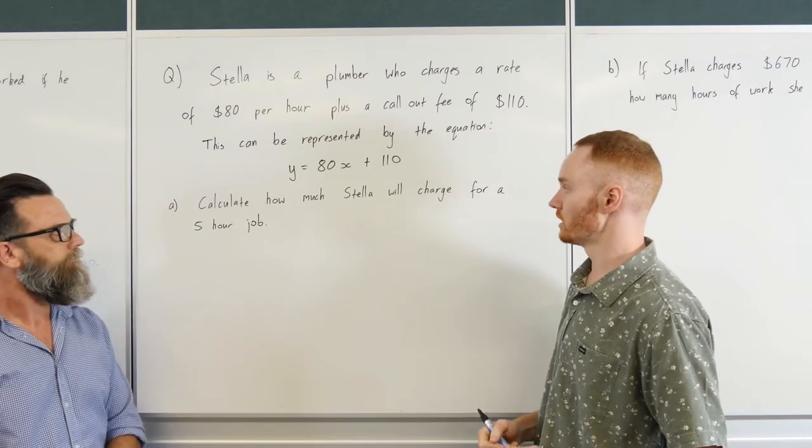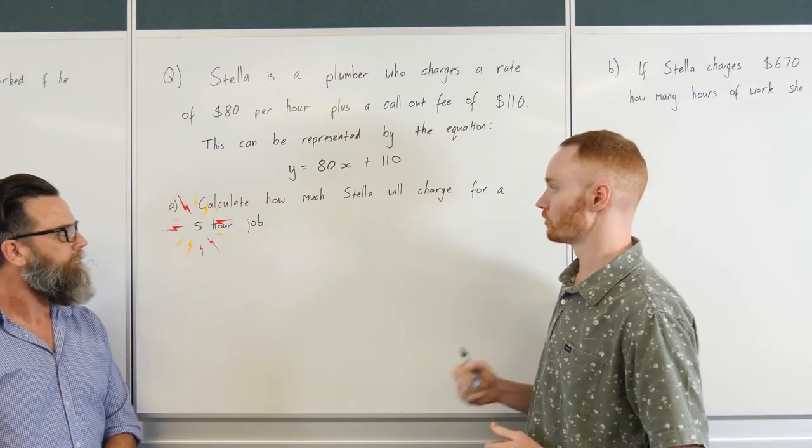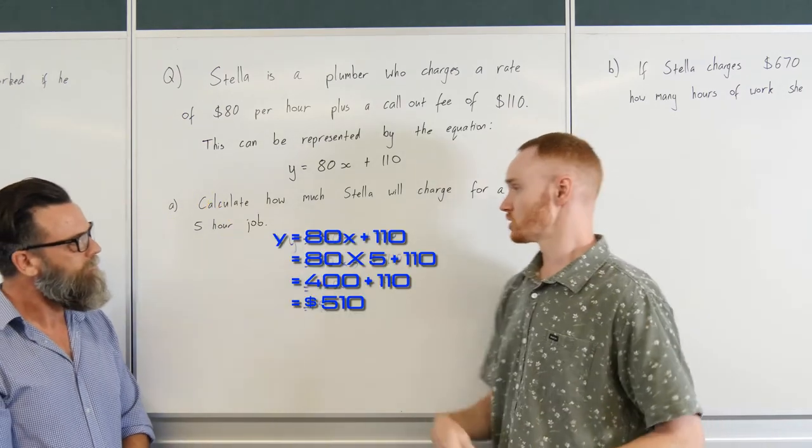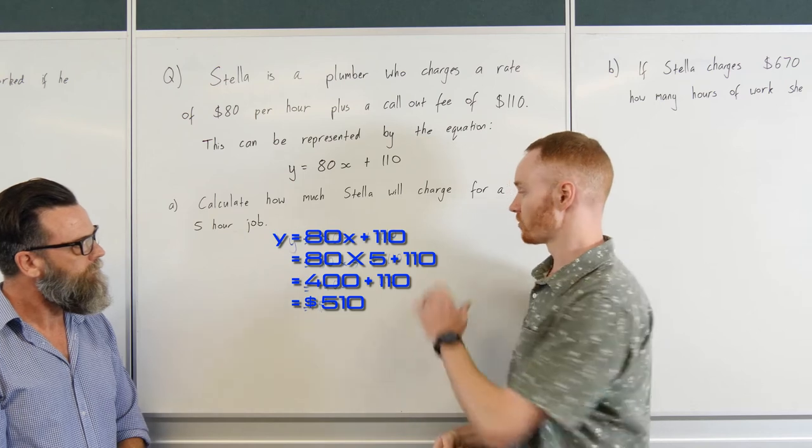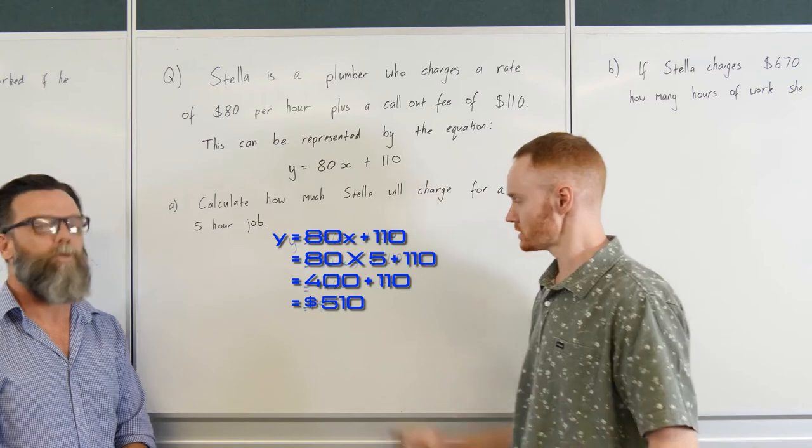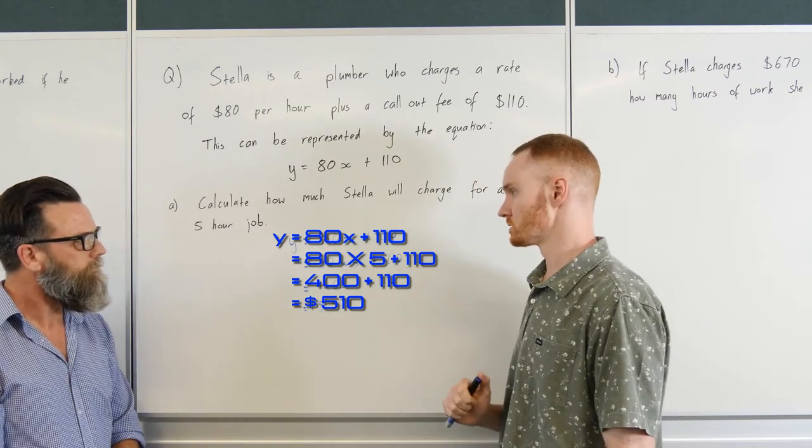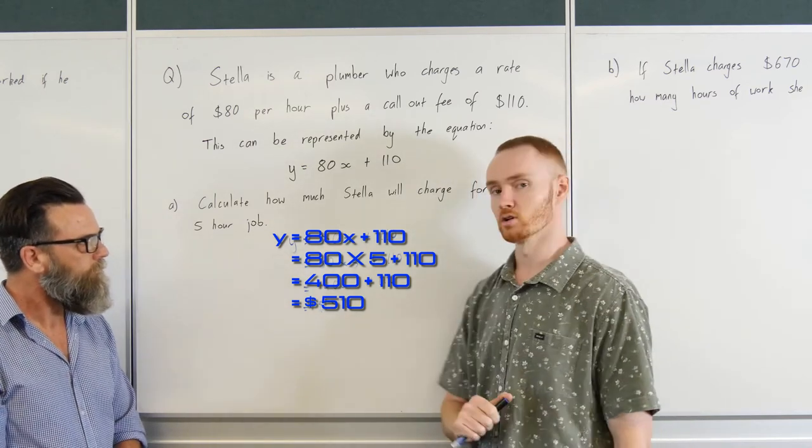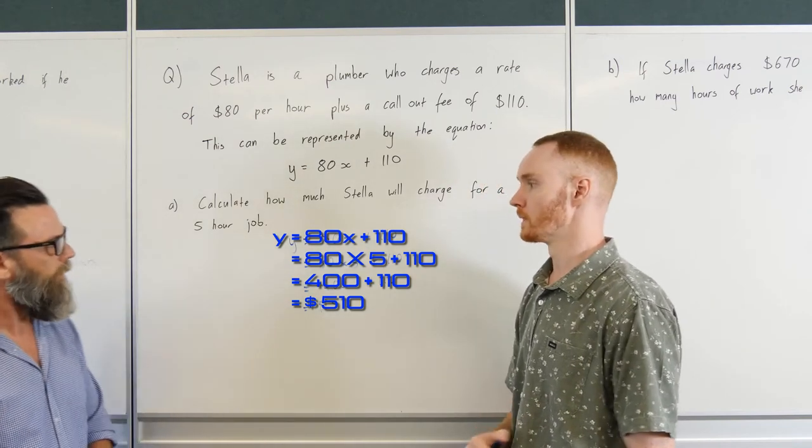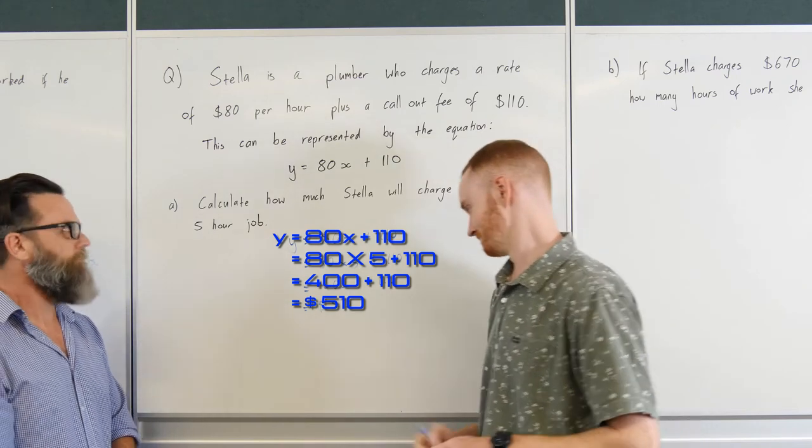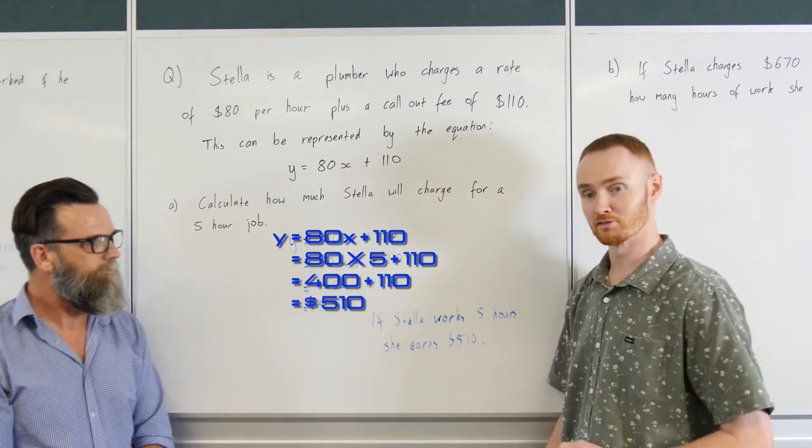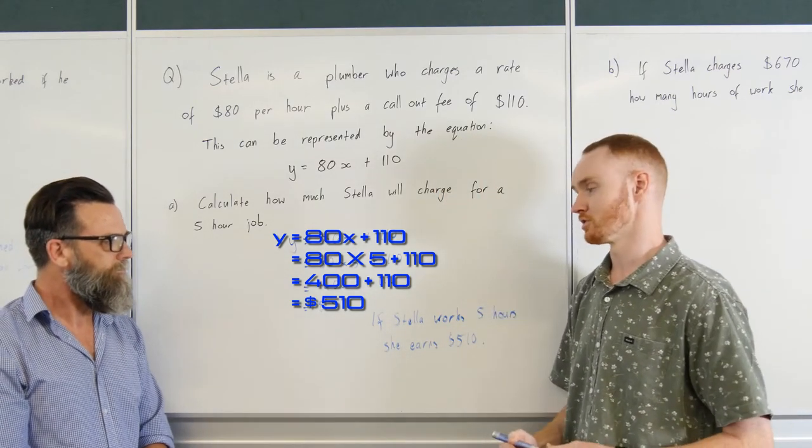So our first question. Calculate how much Stella will charge for a 5-hour job. So we're going to use that same equation. I'm going to substitute in 5 for the x there. We've got 80 times 5 plus 110. Now of course I do my multiplication first. Order of operations. Get the $400 there. Plus 110 call-out fee. Stella's earning $510 for that 5-hour job. Not a bad effort at all. Now of course I'll also have to write my quick little statement. If Stella works 5 hours she earns $510.